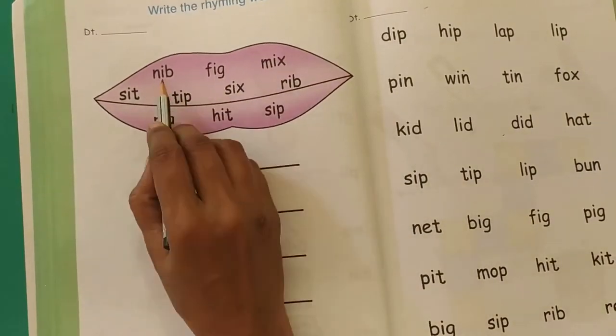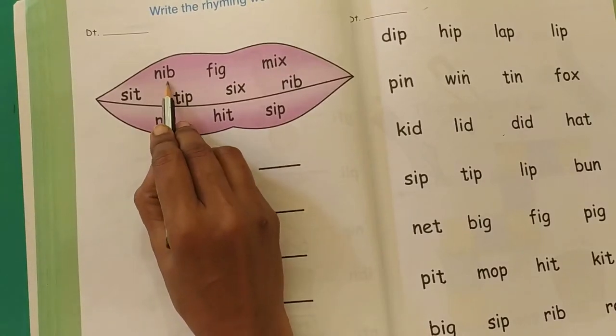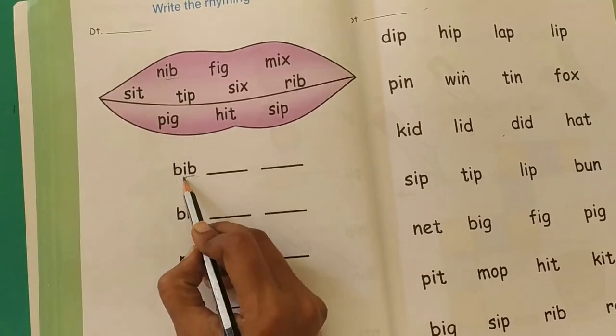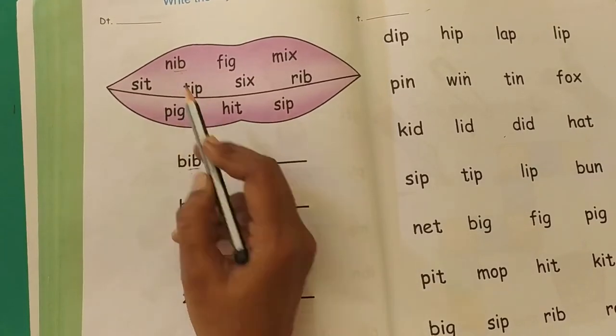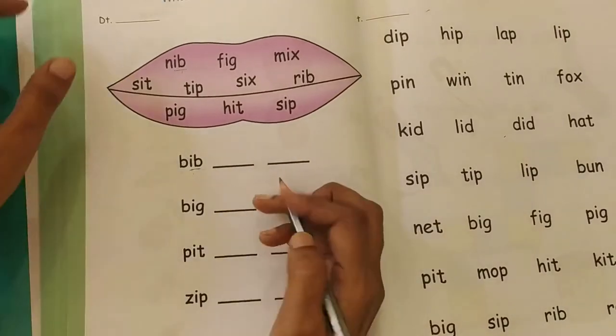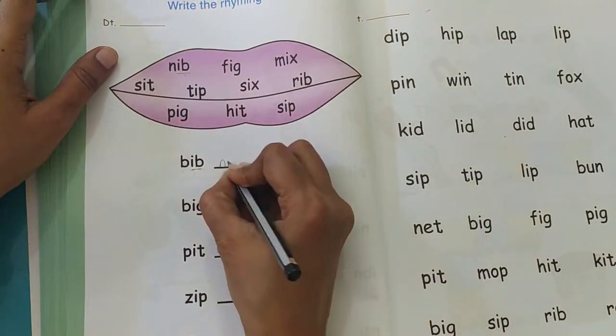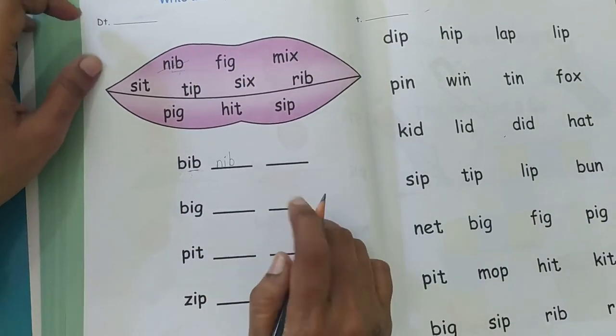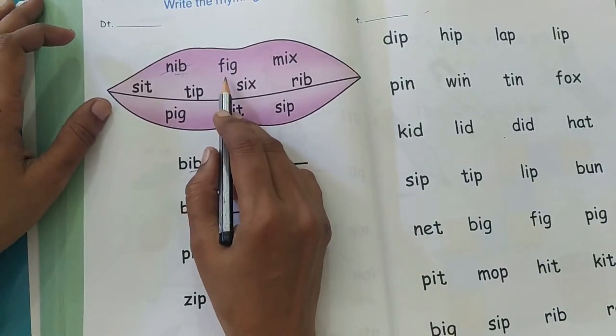So let's see. What is this word? NIP. This also has I-B. Does it rhyme? Yes. So we will write NIP and here I will strike out the word. What is the next word in the box? FIG. Does FIG match with BIB? No.